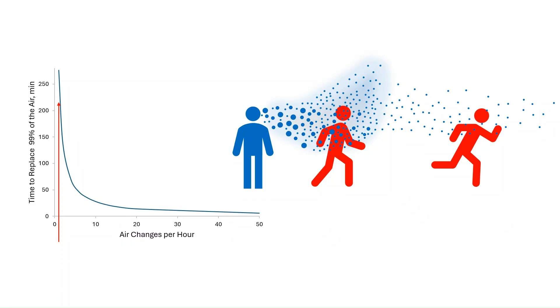For example, an ACH of 1 takes 276 minutes to replace 99% of the air. By increasing the ACH to 4, the time taken to replace 99% of the air drops to 69 minutes. This is a dramatic drop in time, demonstrating the importance of increasing the ventilation in poorly ventilated spaces.